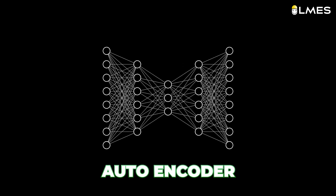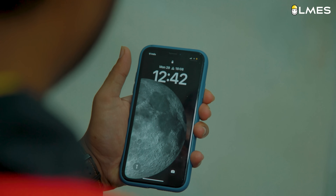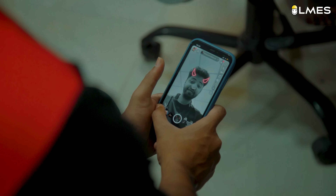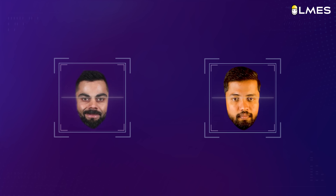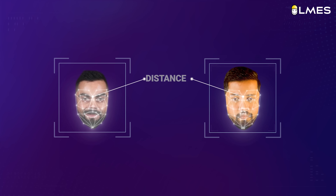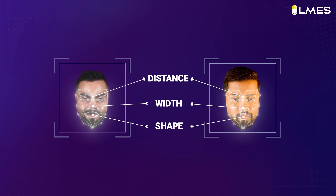Deepfake works in two phases: Training Phase and Generation Phase. In the training phase, autoencoders — a type of neural network — are used. In our phones, we use face unlock and Instagram filters. In our video and photo, it analyzes distance, movement, and shape. This is how facial expressions are captured.